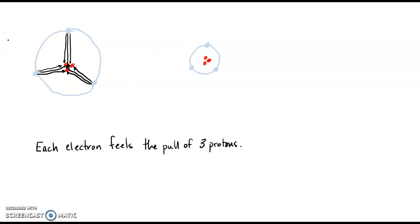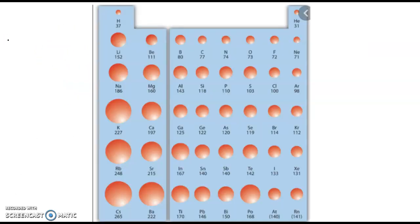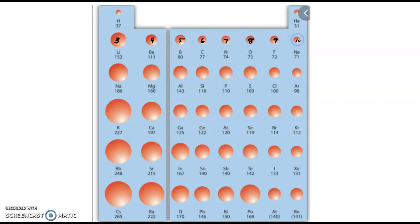This is the reason that as you go across the periodic table, the actual diameter gets smaller. In lithium we have three protons pulling; in beryllium, four protons pulling each individual electron; then five, six, seven, eight, nine, and lastly ten protons pulling each individual electron across the period. So they can pull those electrons closer to the nucleus.